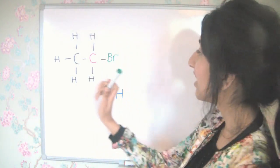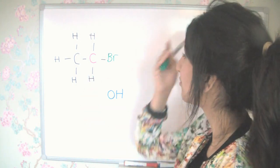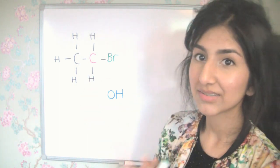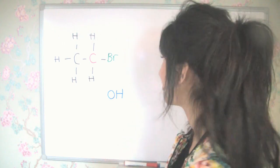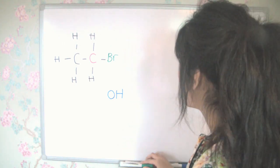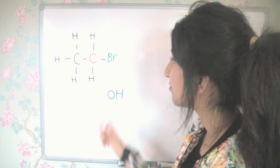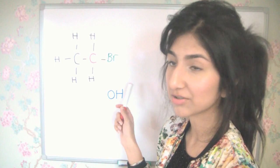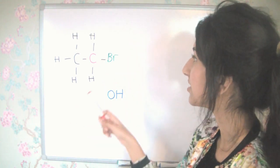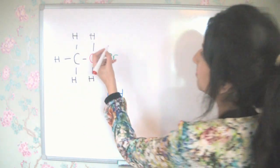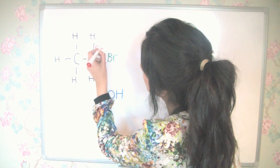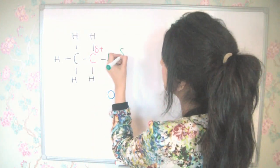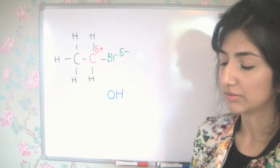Okay, so here we have our halogenoalkane, which is bromoethane, and here we have our hydroxide ion. So the first thing on our diagram that we're going to need to identify is the dipole. So bromine is more electronegative than carbon, which means it attracts the lone pair of electrons in this bond more than carbon does. So that means that carbon has a partial positive charge, and bromine has a partial negative charge, so that's our dipole.